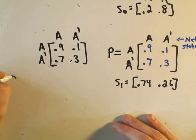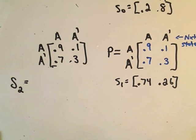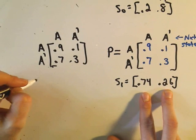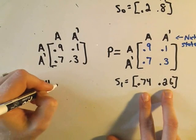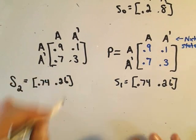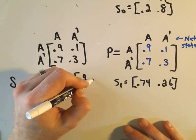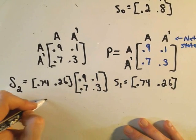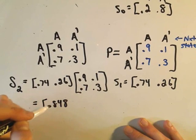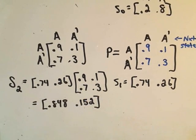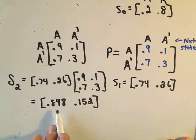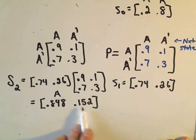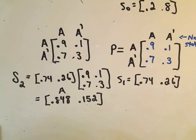Well, if we want to figure out the market share two weeks later, all we would need to do is take the proportion of the people, the market share that happened one week later, which is 0.74 times 0.26, and then again, we would just simply multiply it by this probability matrix, 0.9, 0.1, 0.7, 0.3. You can check my arithmetic here. I got the values 0.848, 0.152. So this says two weeks later, brand A now controls almost 85% of the orange juice market, while other brands have just a touch over 15%.